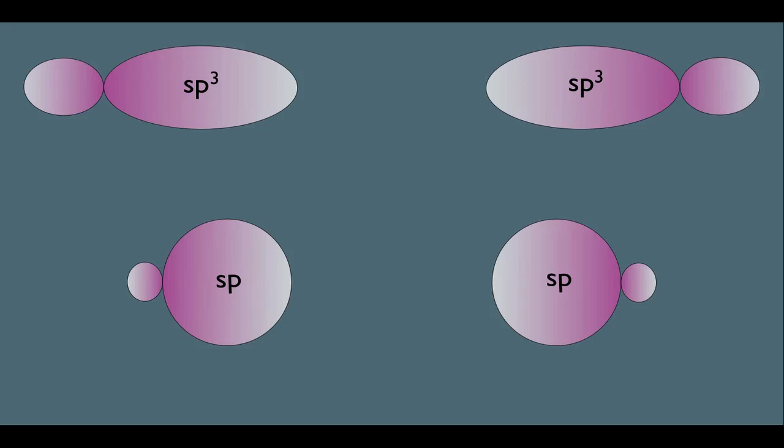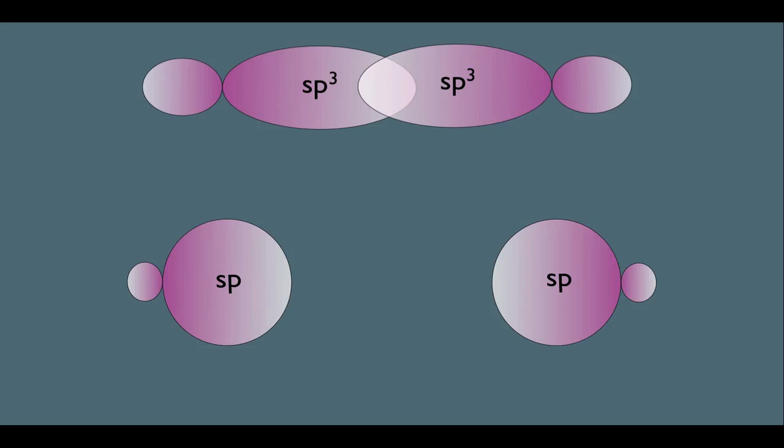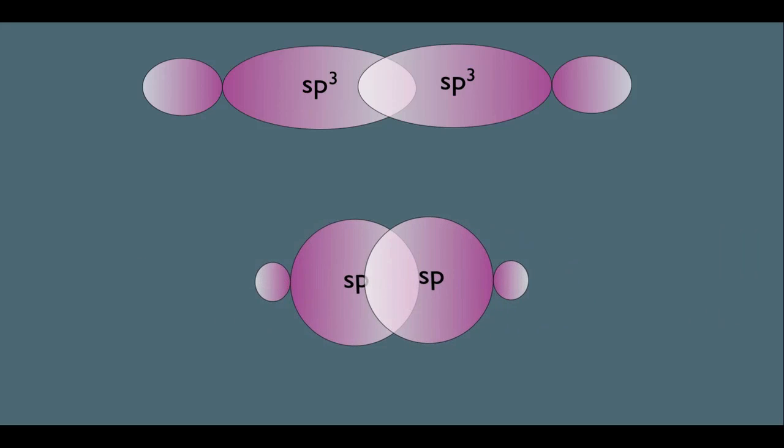Remember, the top molecule carbon-carbon bond is an sp3 overlap, where the bottom molecule has an sp overlap. Again, because of the relative sizes and shapes of these orbitals, we can make sense of bond strength. Notice in the top bond we have this much overlap, and in the bottom bond we have this much overlap. We can clearly see that the bottom bond has more overlapping of the orbitals and the top one has less overlapping.